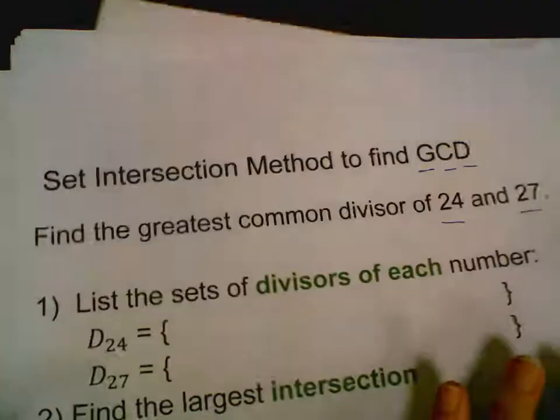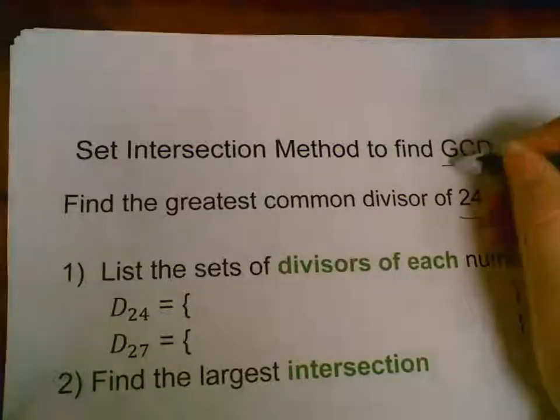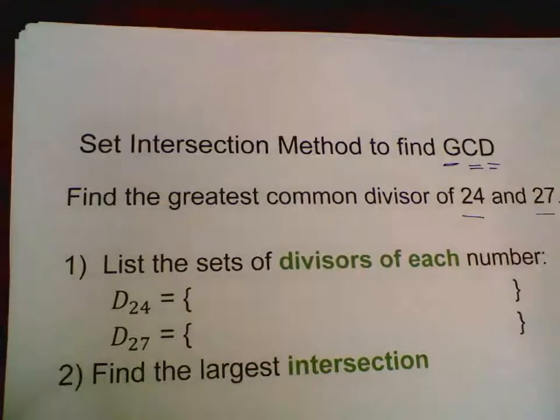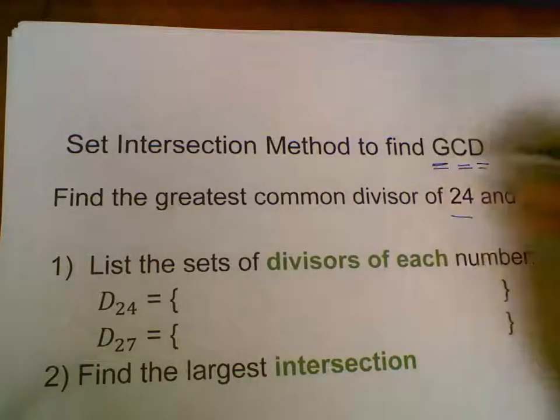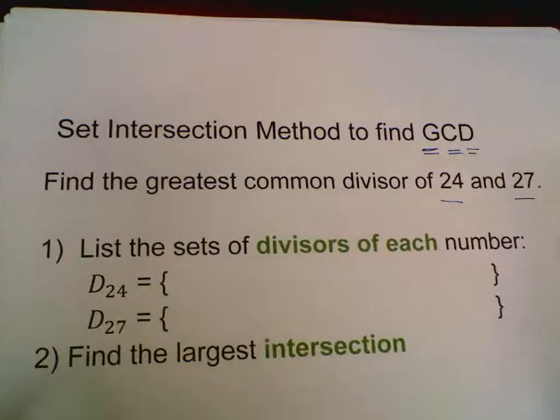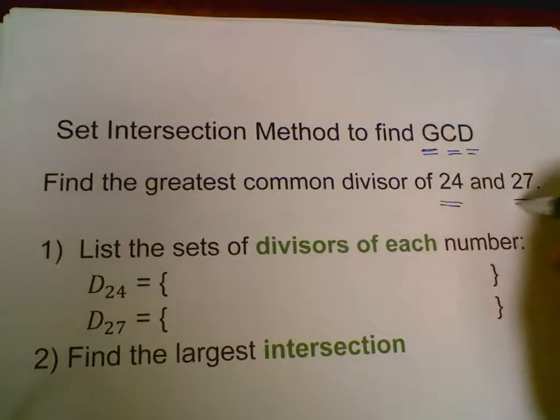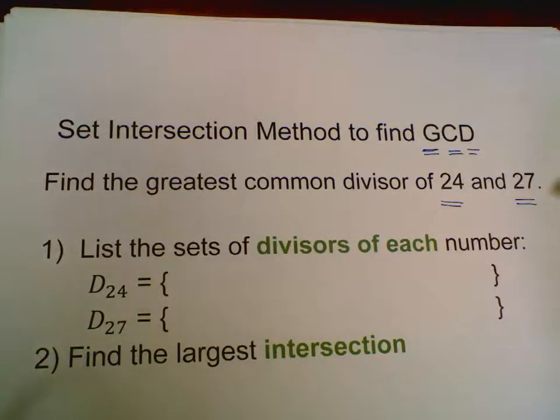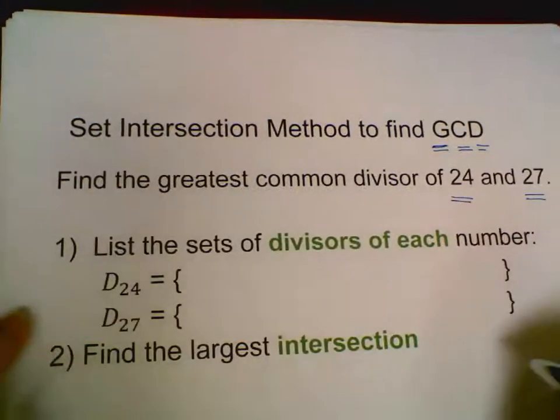Let me give you some examples of the first method, set intersection method for greatest common divisor or greatest common factor. The set intersection method is listing all the divisors.